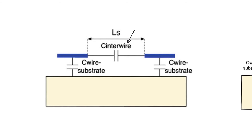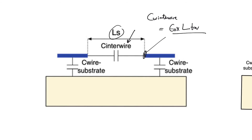Interwire capacitance is generally small in older technologies because the distance between wires is large and the height of the wires is relatively small. Modeling it as a parallel plate capacitor, it equals epsilon_oxide — since the wires are separated by silicon dioxide — multiplied by the plate area (length L times wire thickness Tw), divided by the separation Ls. This is small because L·Tw is small (mainly because Tw is small) and because Ls is large.